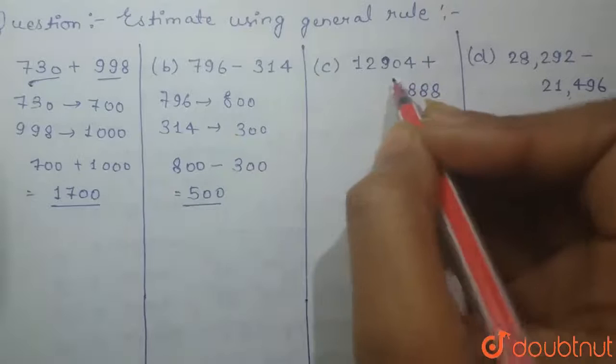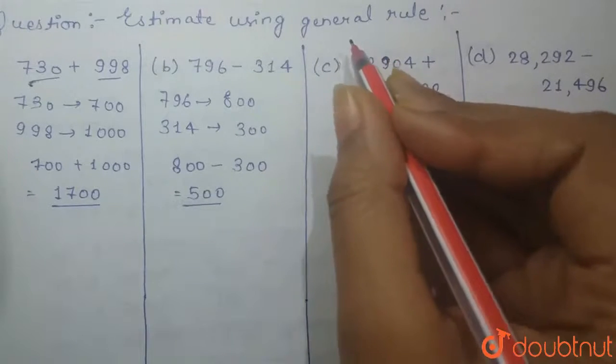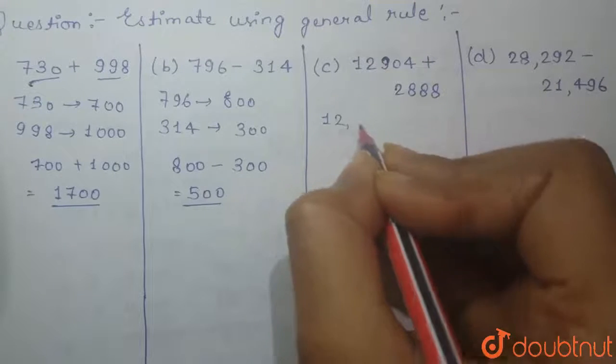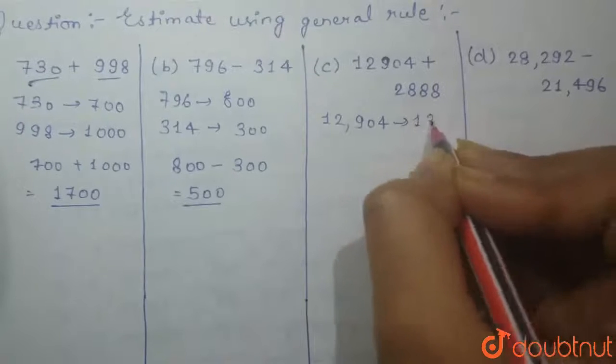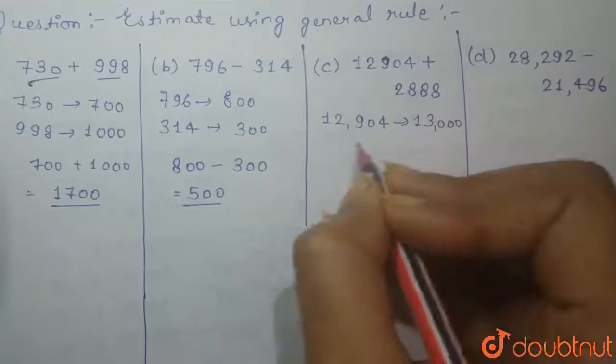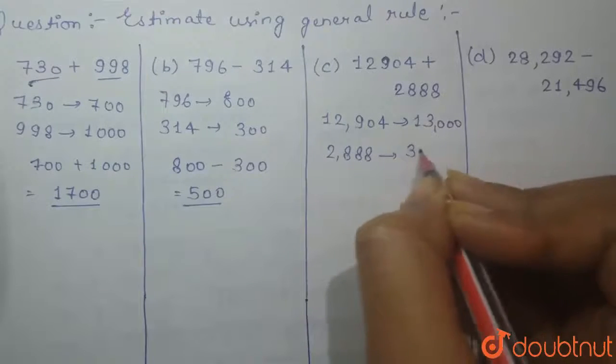In third part, this will be rounded off to the nearest thousand according to the general rule. So here, 12,904 will be rounded off to 13,000 and 2,888 will be rounded off to 3,000.